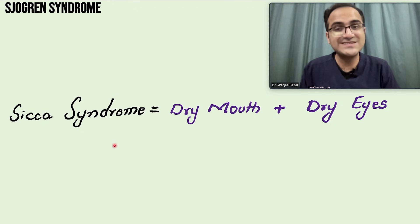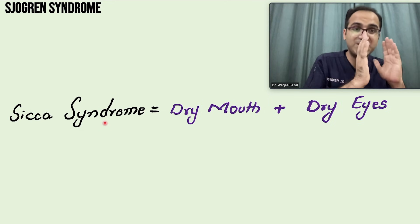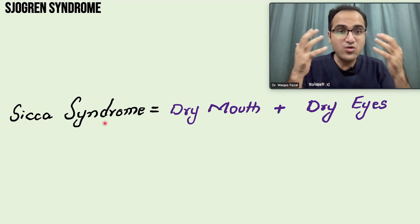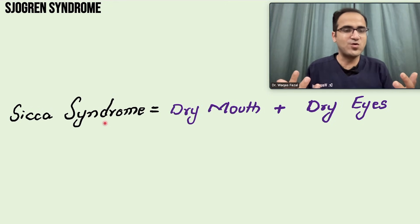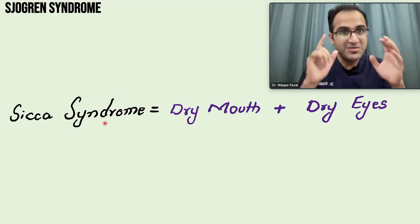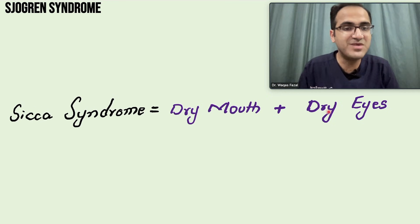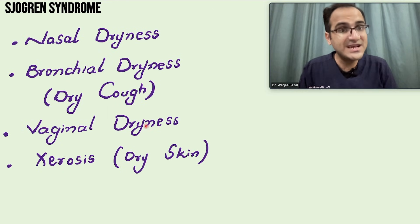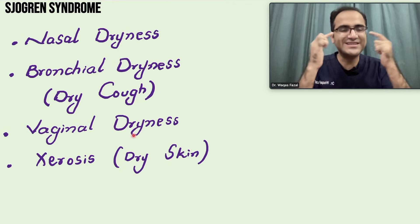When there is dry mouth with dry eyes together, that is called sicca syndrome. Sicca syndrome can also have extra-ocular and extra-oral presentations. Patients can have nasal dryness, bronchial dryness resulting in dry cough, vaginal dryness, and dry skin — other secretory glands of the body can be affected. However, sicca syndrome specifically refers to isolated dry eyes and dry mouth without systemic manifestations.